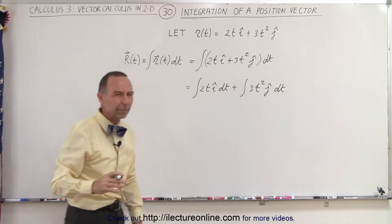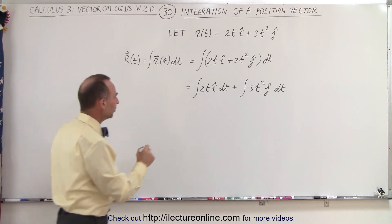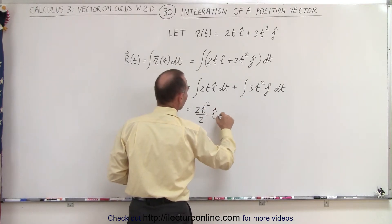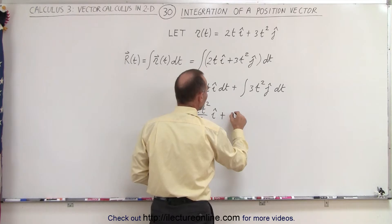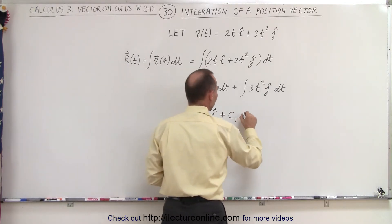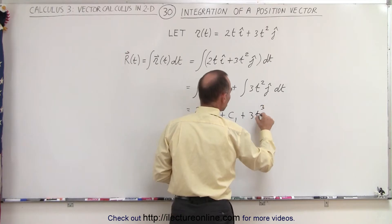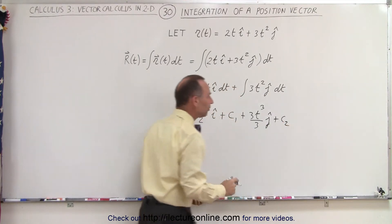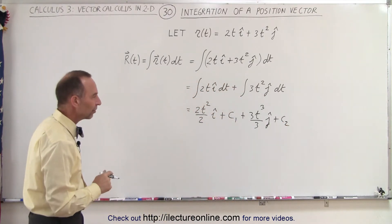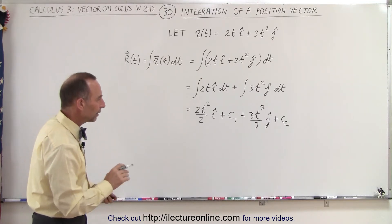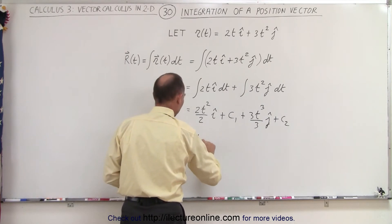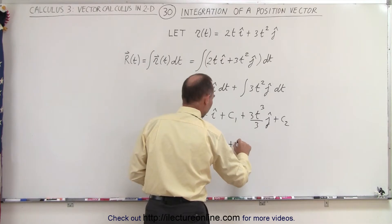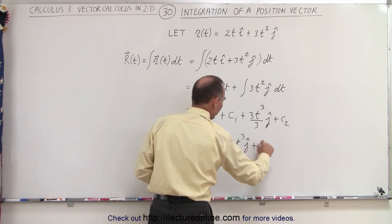We don't really have to do that, but it'll clarify something. Now let's integrate: this becomes 2t squared divided by 2 in the i direction plus a constant of integration c1, plus 3t cubed over 3 in the j direction plus another constant c2. Simplifying, this becomes t squared in the i direction plus c1, plus t cubed in the j direction plus c2.